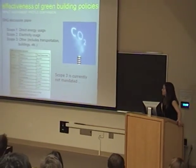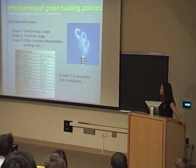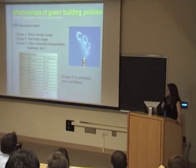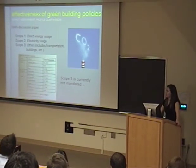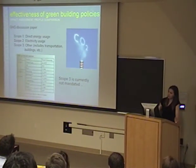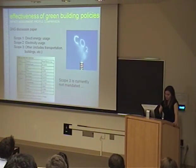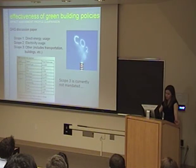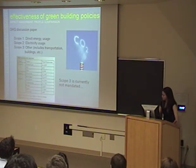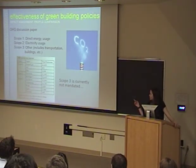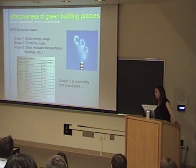Currently, Scope 1 and Scope 2 — direct energy usage and electricity usage — are included in the UBC GHG inventory. In Scope 3, buildings are included, which before now there hasn't been comprehensive data on.